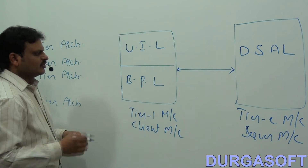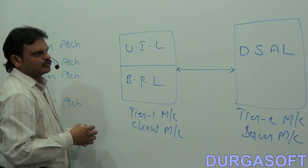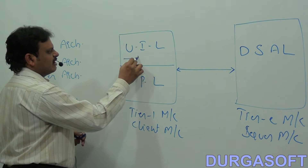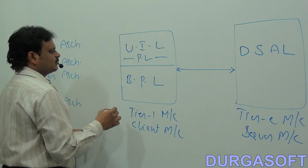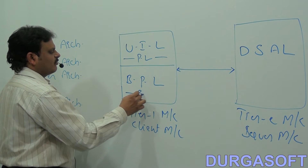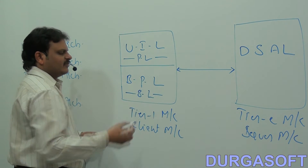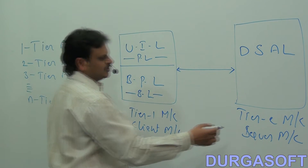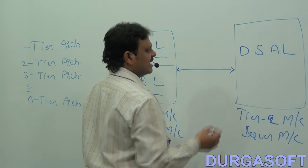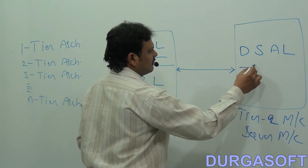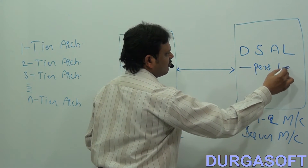If we observe this, in the tier one machine we have to provide the user interface layer — that means presentation logic. And also the business processing layer — that means business logic. In the tier two machine, the second machine, we have to provide the data storage and access layer — that means persistence logic.